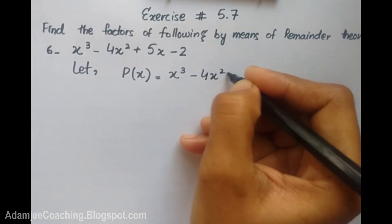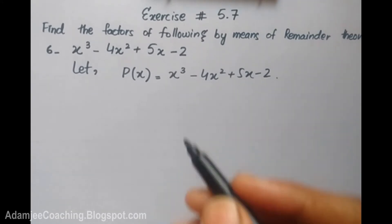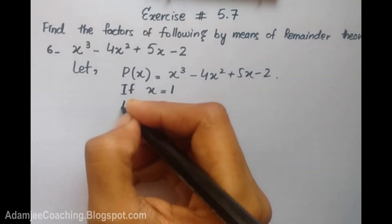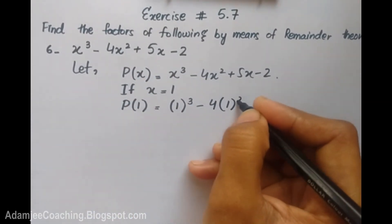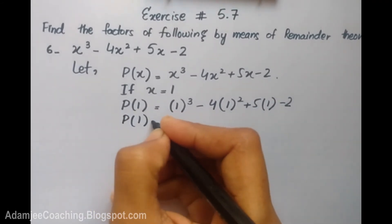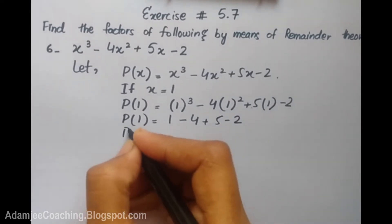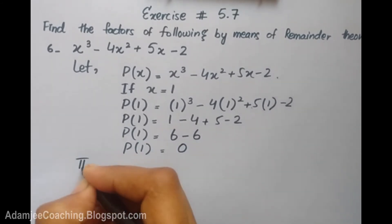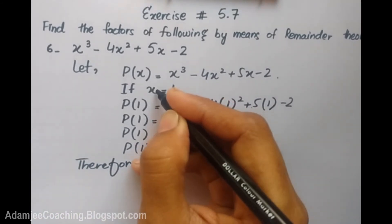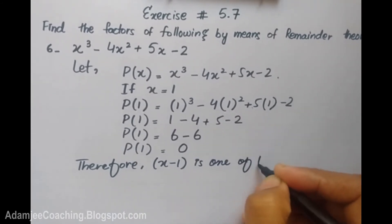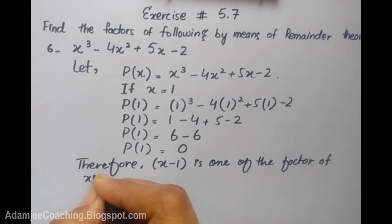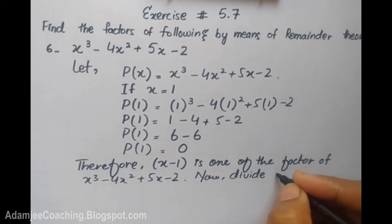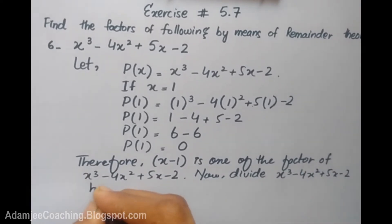Okay, let p(x) equal x cube minus 4x squared plus 5x minus 2. We will put the value of x. If x equals 1, then p(1) equals 1 minus 4 plus 5 minus 2, which gives 0. So x minus 1 is one of the factors of x cube minus 4x squared plus 5x minus 2. Now divide x cube minus 4x squared plus 5x minus 2 by x minus 1.